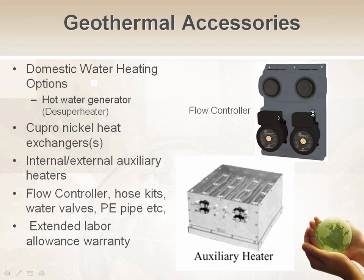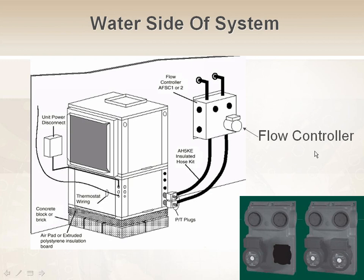A flow controller is essentially a pumping station — a box with one or two pumps that pumps water through the outdoor loop field, manages the head pressure of that loop field, and regulates the flow of water to the indoor unit. We typically design systems at 3 GPM per ton. So for a five-ton unit, the flow controller would regulate 15 GPM to the unit to ensure constant, accurate water flow to extract enough heat.